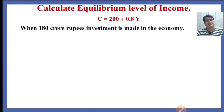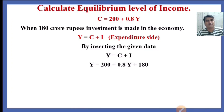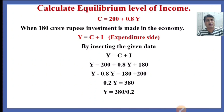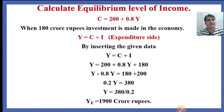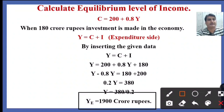We have to first determine the equilibrium level of income. As we know, income is either equal to consumption plus investment, or income is equal to consumption plus savings. Since investments are given, we use the formula: income equals consumption plus investment. Substituting the consumption function and 180 as investment, the total national income works out to 1,900 crore rupees — the equilibrium level of income.